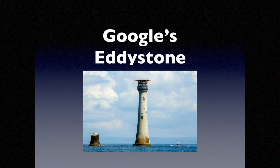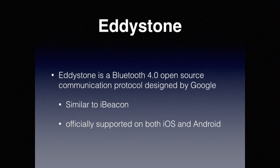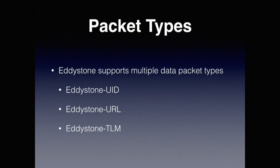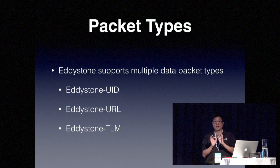Next, let's talk about Google's Eddystone. Remember I asked why they call it Eddystone? It is named after a lighthouse in the UK called Eddystone. Eddystone is a Bluetooth 4.0 open source communication protocol, and the good news is it is officially supported on both iOS and Android. The key difference is that Eddystone is much more feature-rich compared to iBeacons.